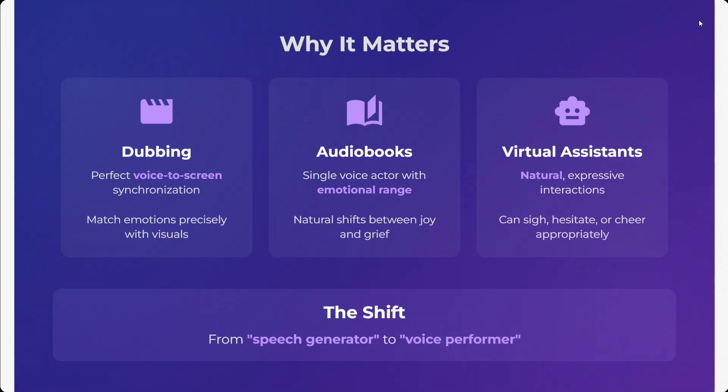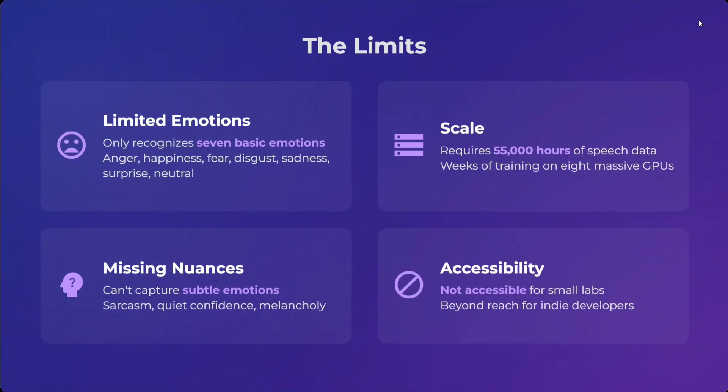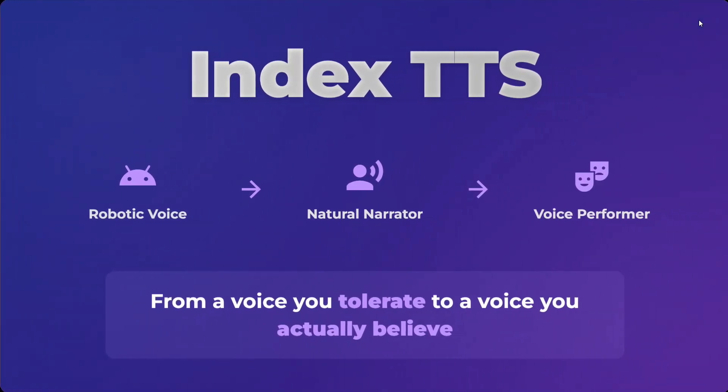Why does it matter? You can now generate perfect dubbing, audio books, virtual assistants, and much more. The team has described it as going 'from speech generator to voice performer.' However, there are limitations: it is currently limited to only 7 emotions — anger, happiness, fear, disgust, sadness, etc. In terms of scale, it requires 55,000 hours of speech data and weeks of training on eight massive GPUs. It also can't capture subtle emotions like sarcasm, quiet confidence, or melancholy, and is beyond reach for indie developers for now.